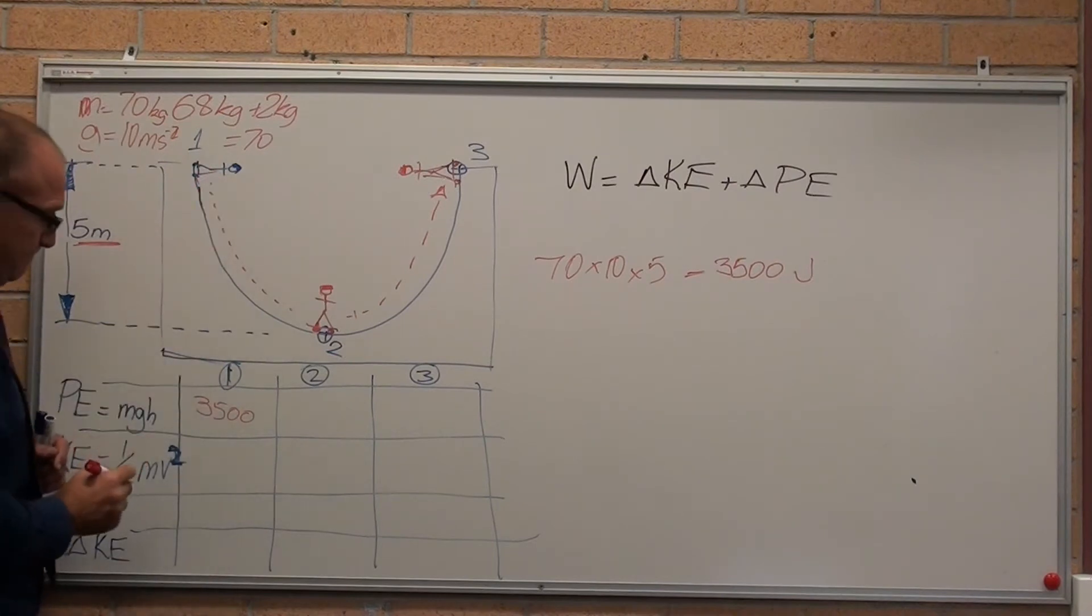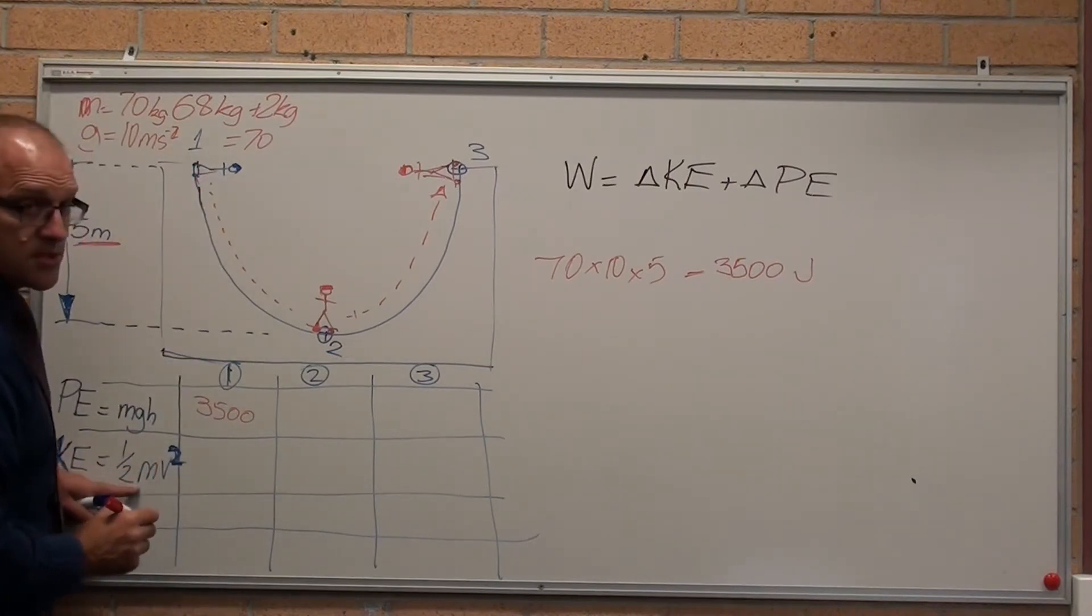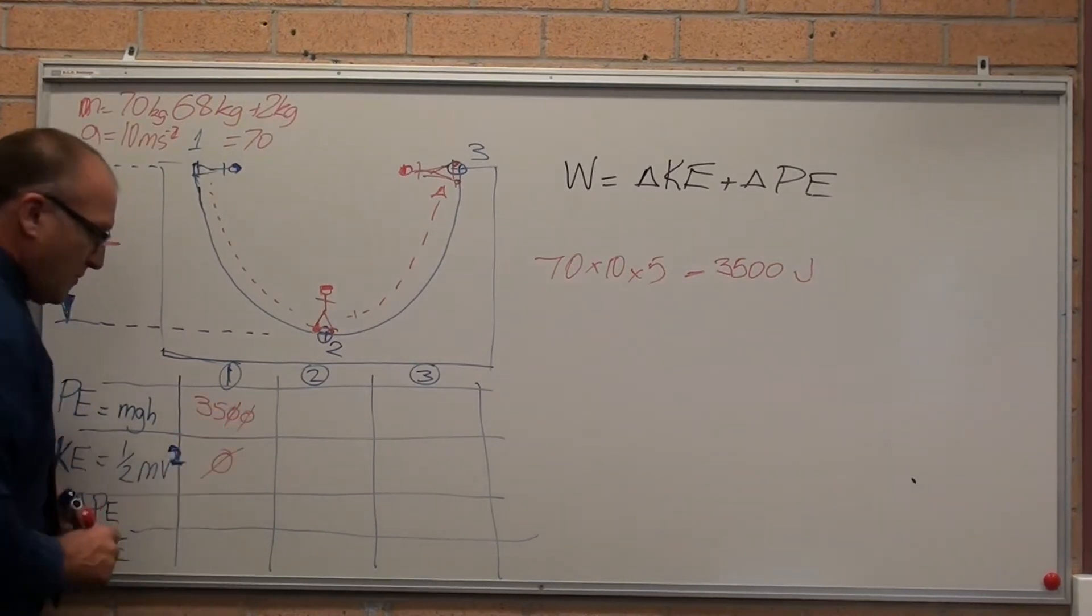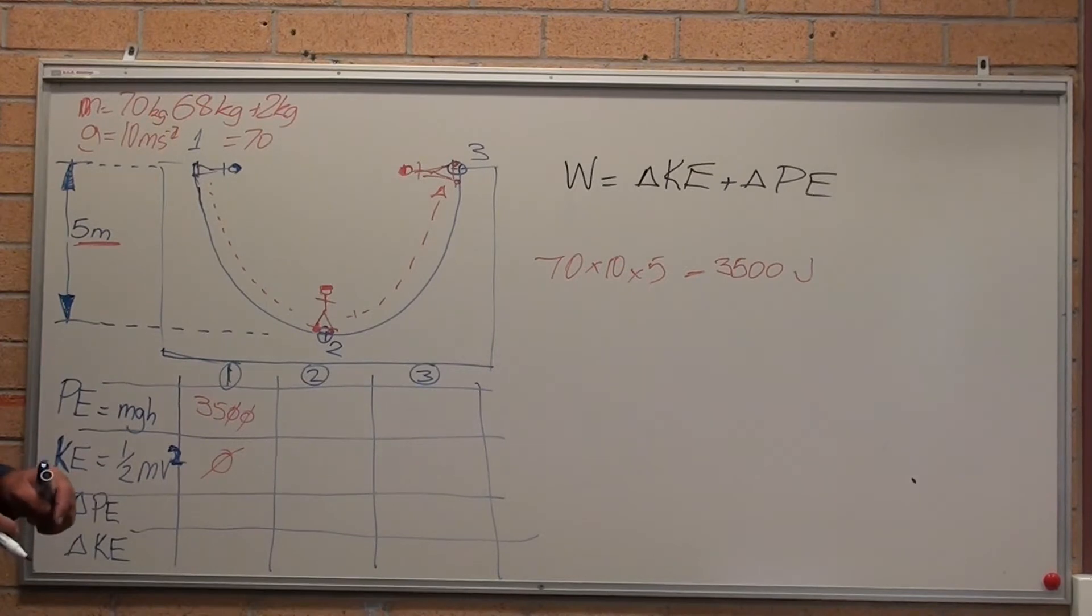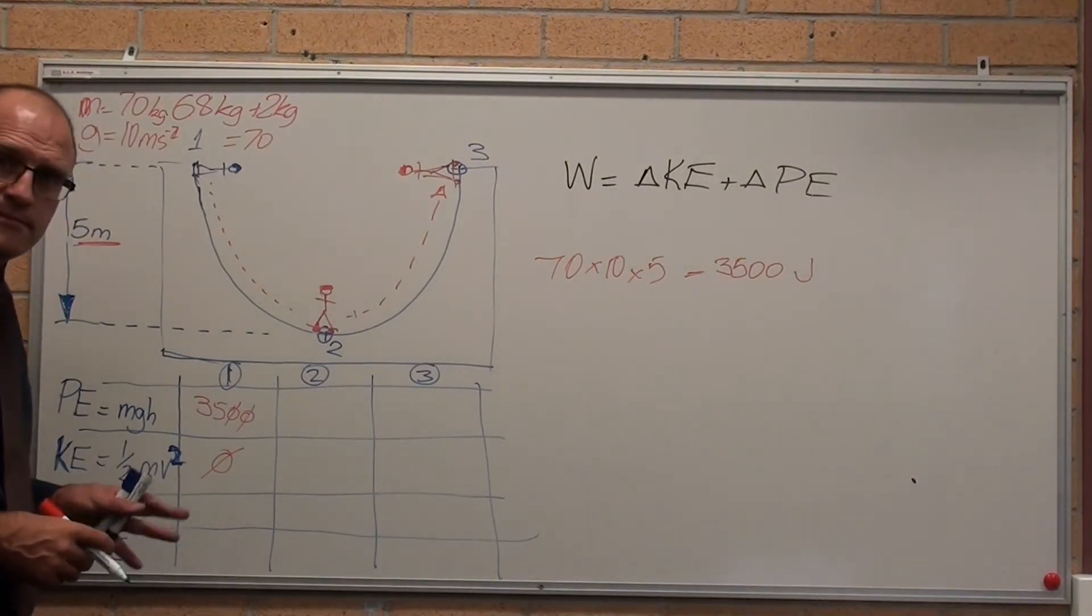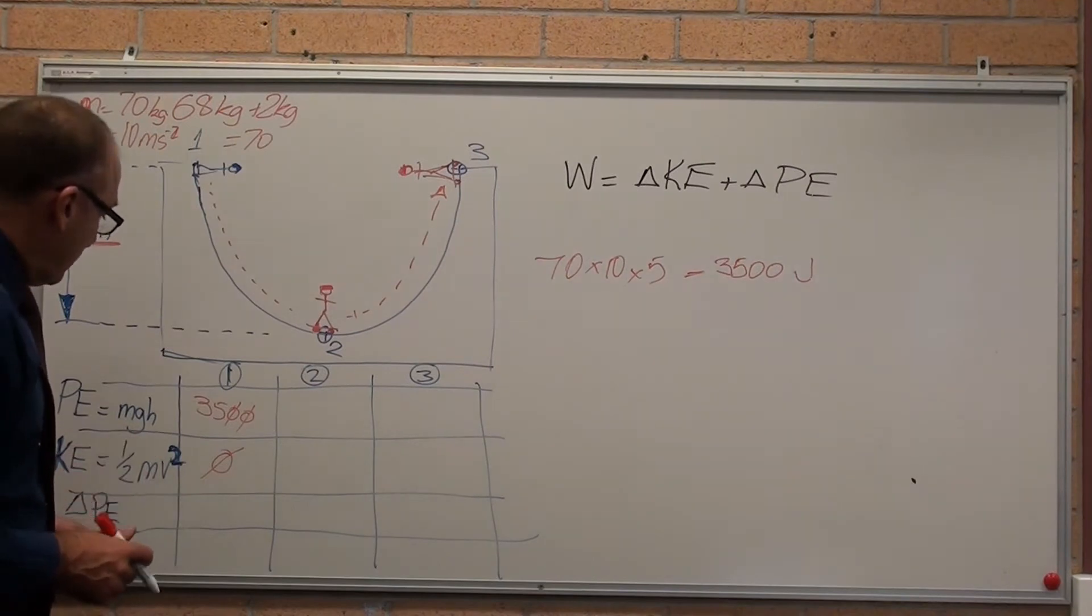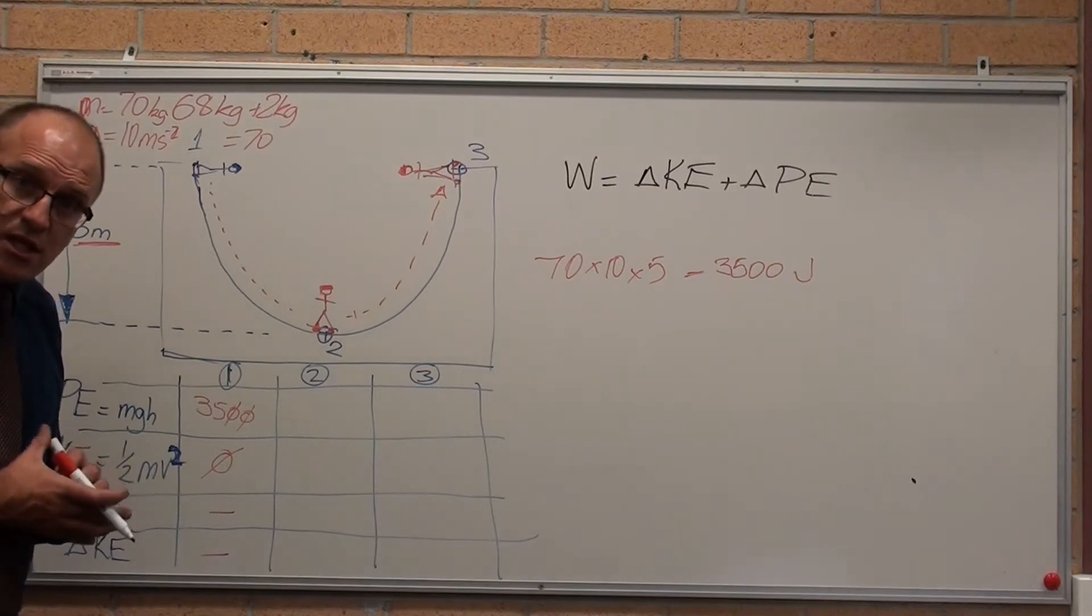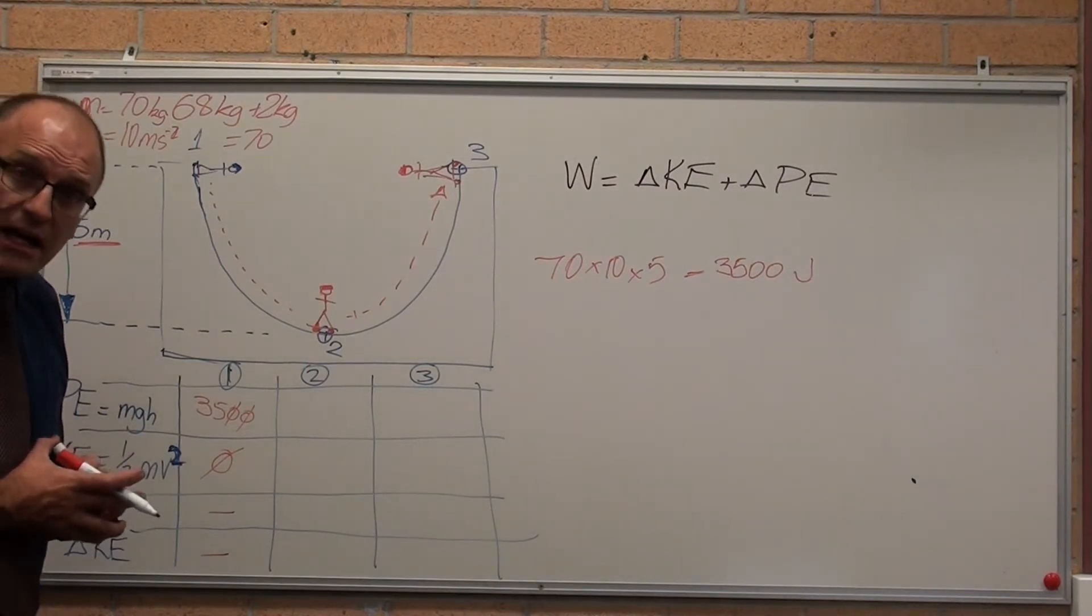He's still. One half times mass is 70. His velocity is zero. So there is no velocity. Therefore, there is no kinetic energy. There is no change in potential energy. There is no change in kinetic energy, because that's our starting point.